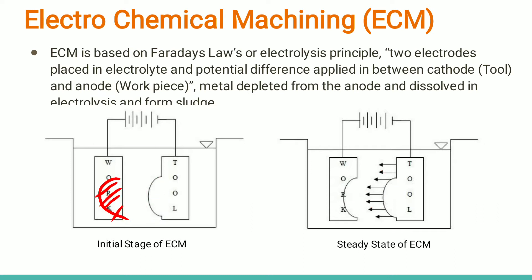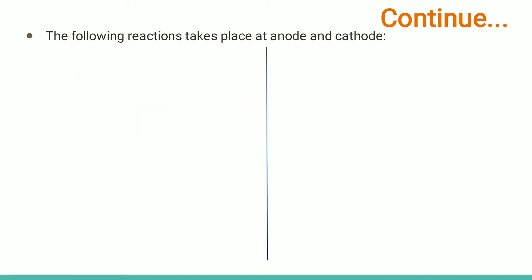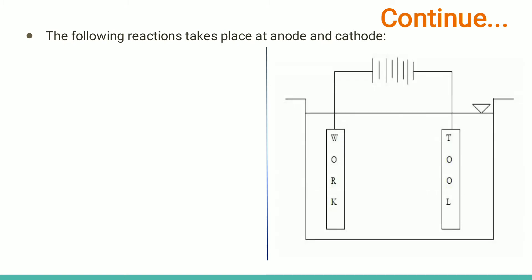This is basically the concept used for the ECM process. The important thing is how the material is removed and what reactions take place during material removal. Next, we are going to study that part. Here we are using two electrolytes for better understanding — though one electrolyte is sufficient. If asked elsewhere, you can consider just one electrolyte.